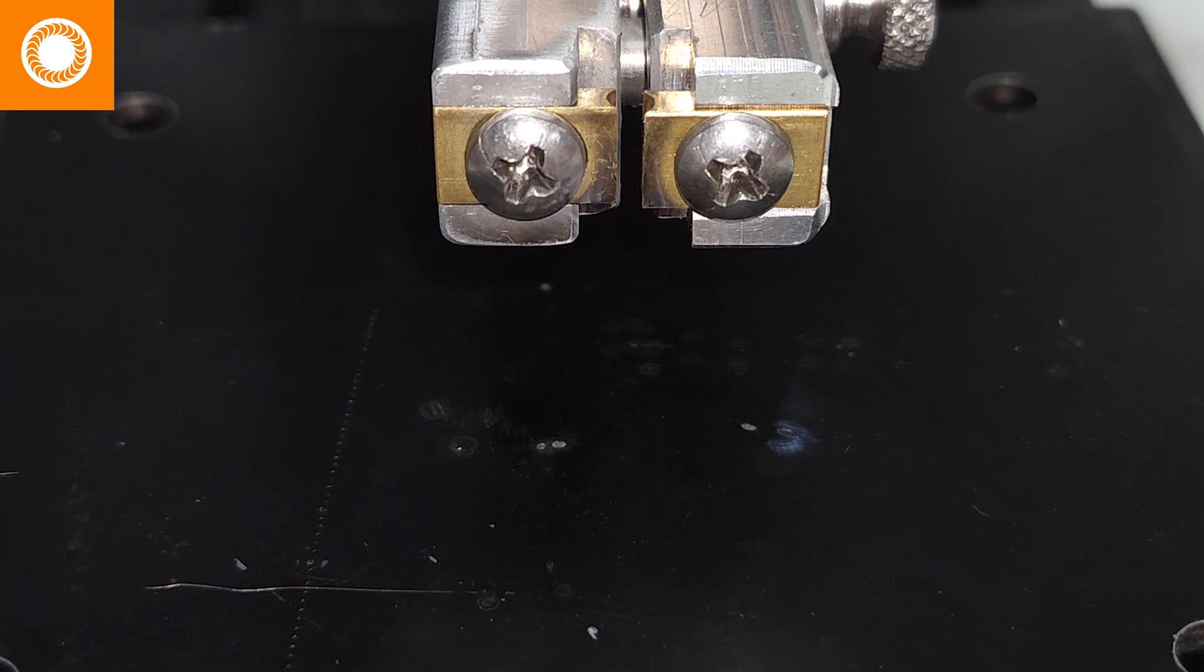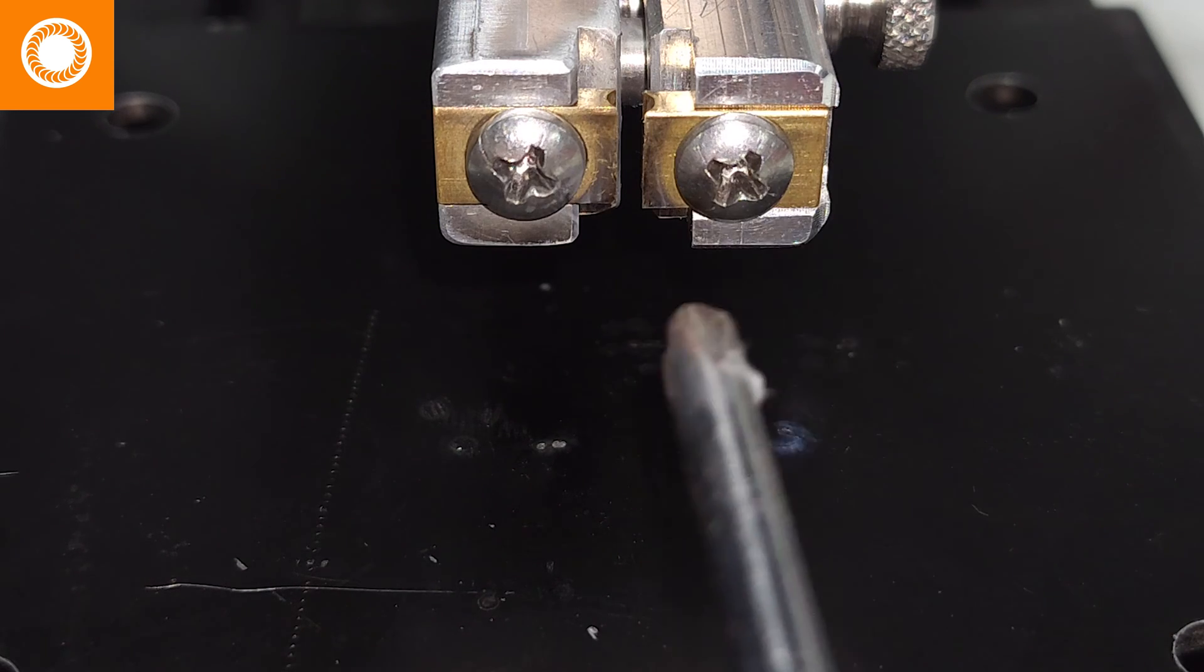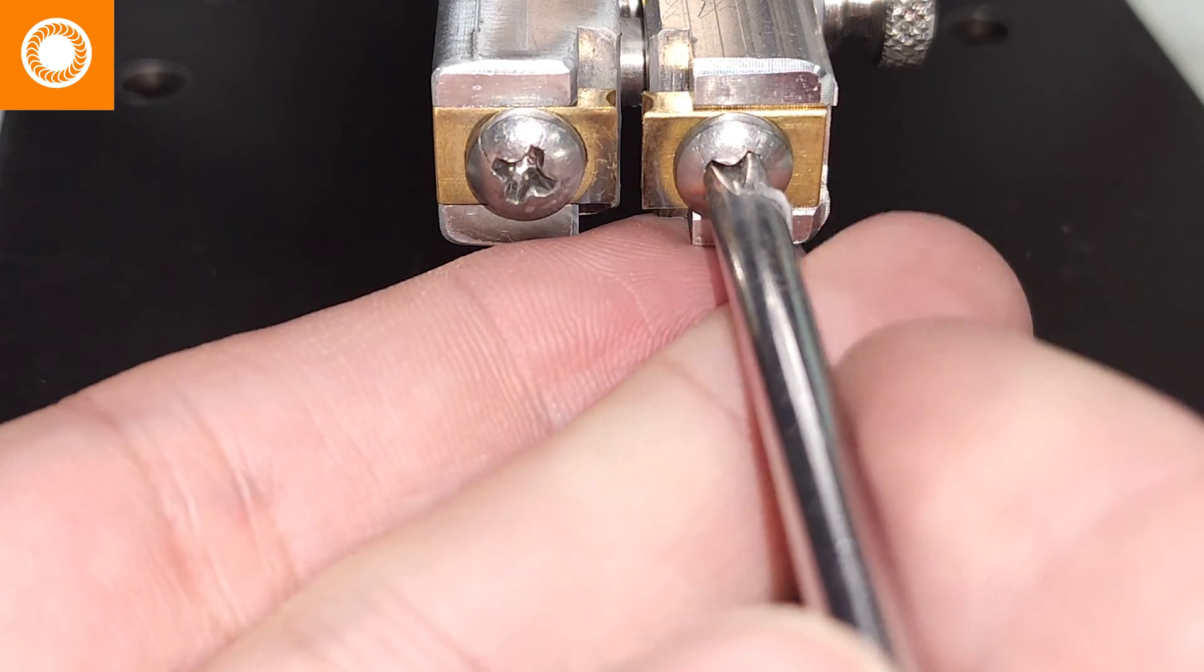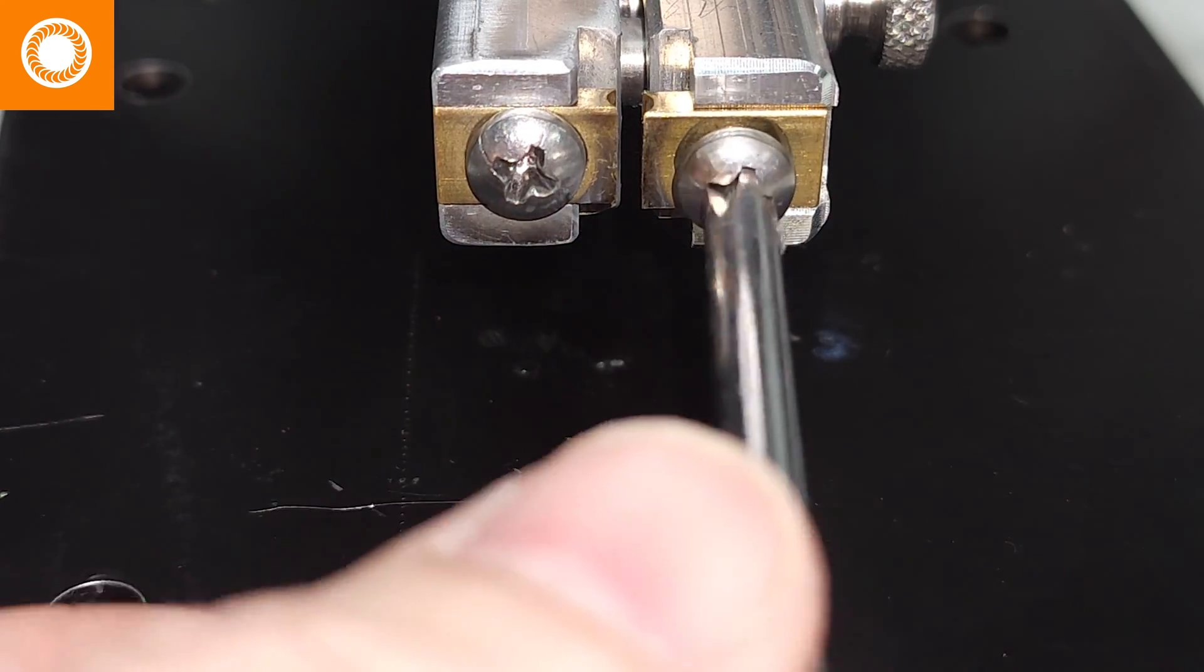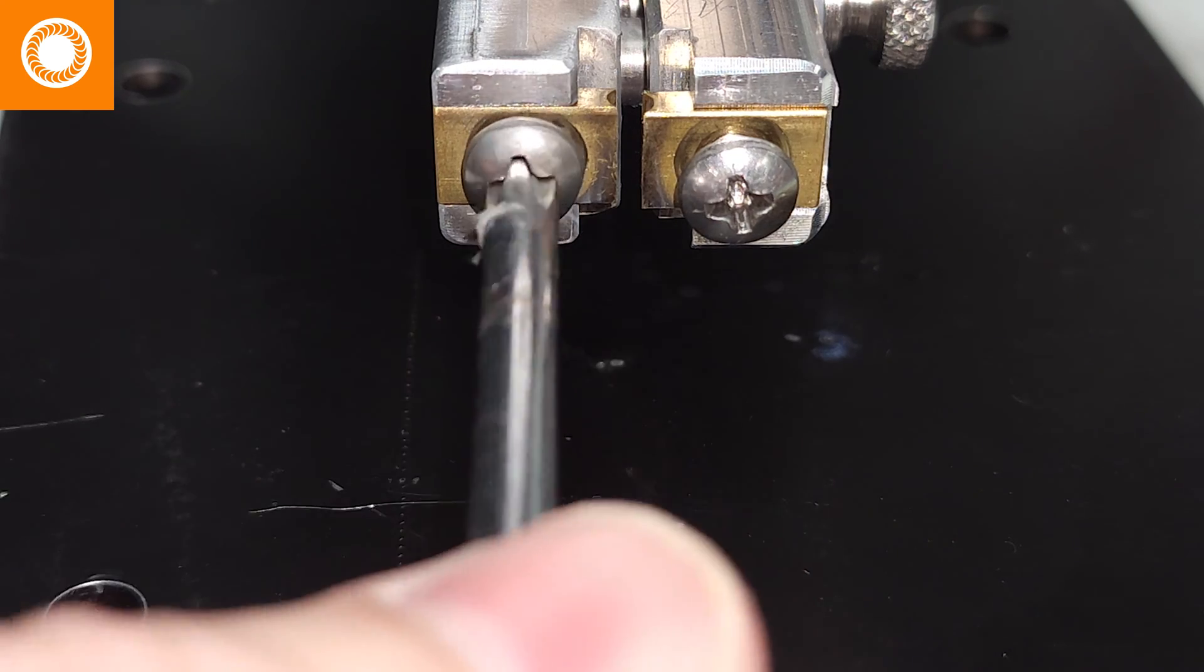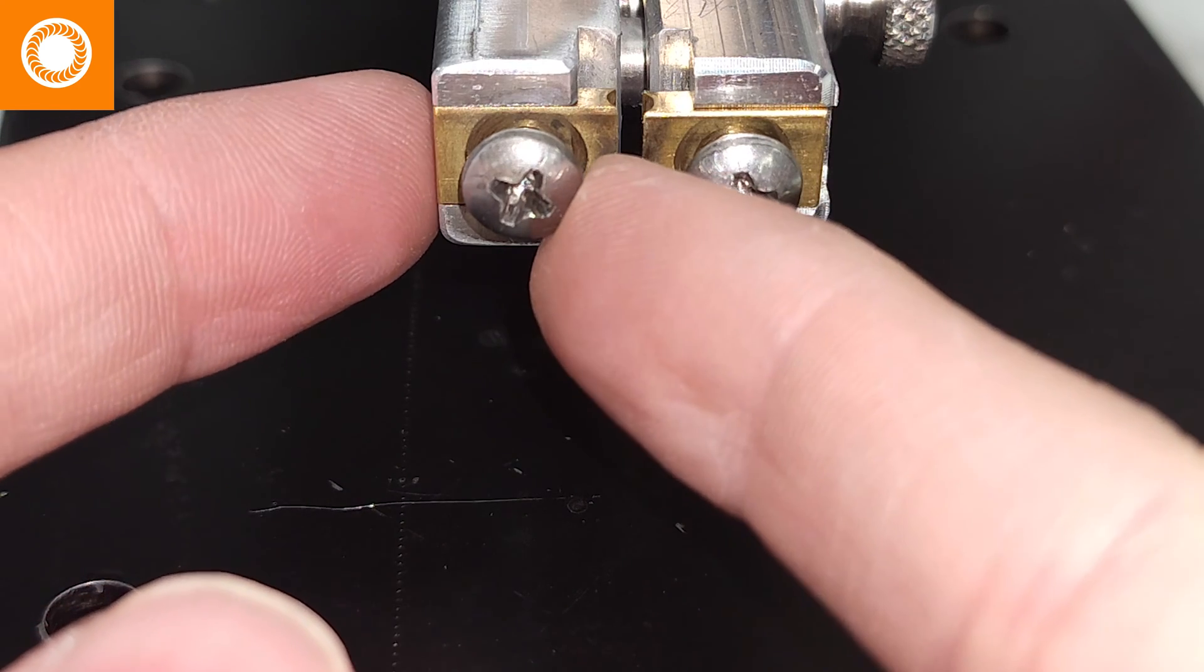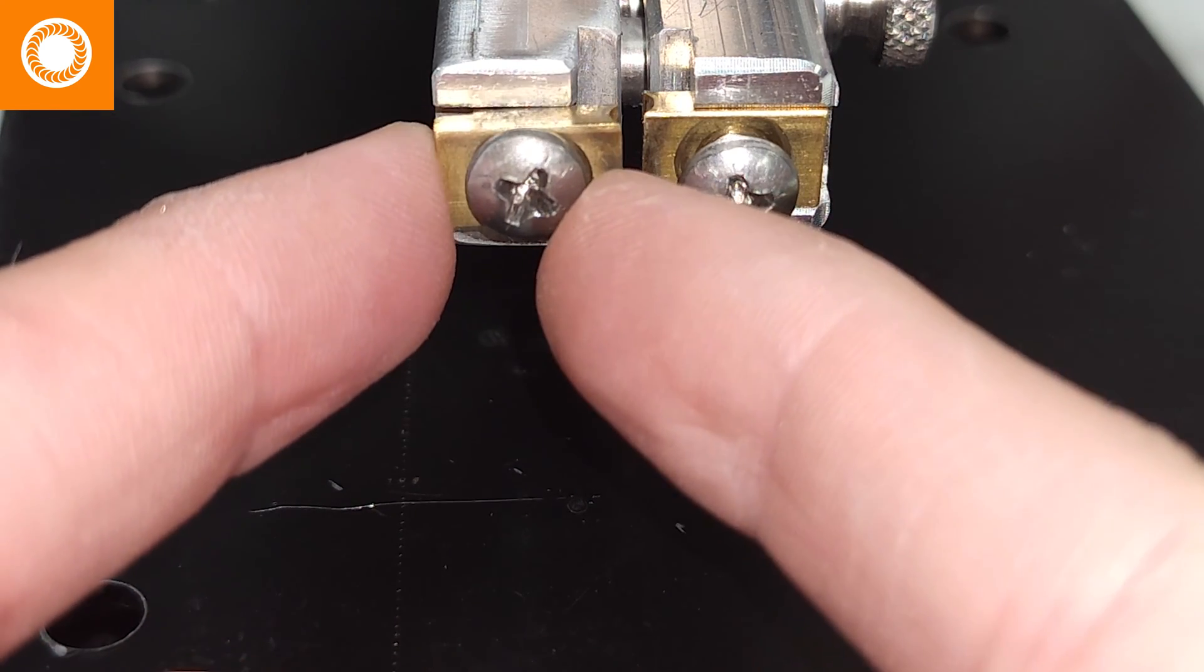So the first thing is we need to loosen both of these screws up in order to have these receptacles accept a square electrode. So I'm going to loosen them up just enough that when I come in here I can pull this brass fitting out and away.